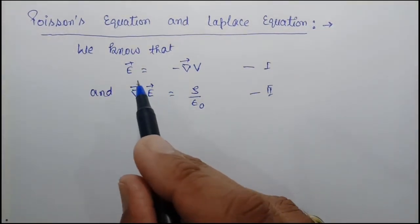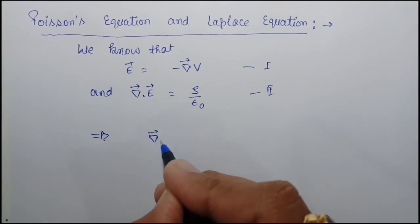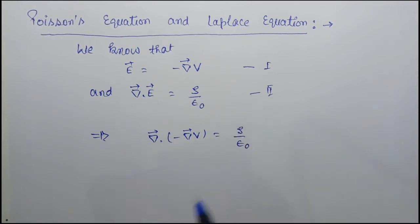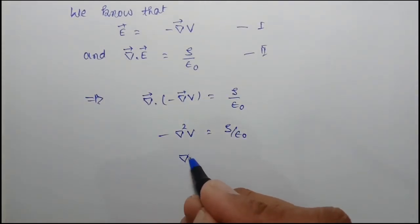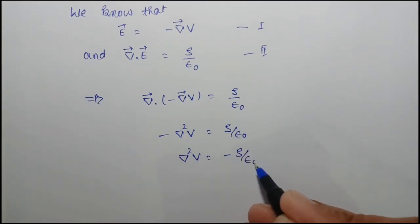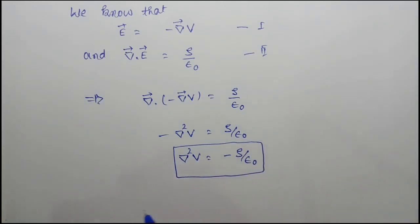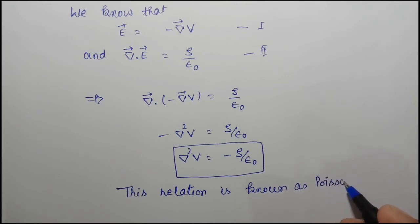Now, we substitute the value of E from equation one into equation two. Then we get del dot (minus del V) equals rho over epsilon naught. Or, we can write del squared V equals minus rho over epsilon naught. This relation is known as Poisson's equation.